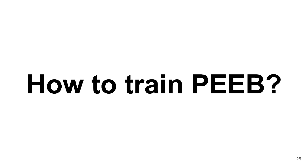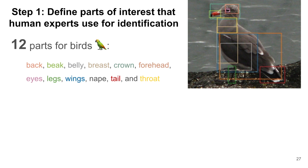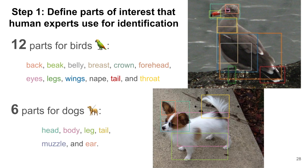The first training step is to define parts of interest that humans usually use to recognize an object. For birds, we follow annotations from the CUB dataset and merge similar parts such as left wing and right wing into wings, to avoid redundant features and speed up training and inference. Similarly for dogs, Stanford Dogs ImageNet defines four parts of interest, and we find that muzzle and ears are also important for recognizing a dog breed. In sum, we conduct experiments with eleven parts for birds and six parts for dogs.